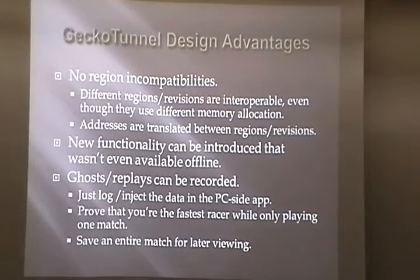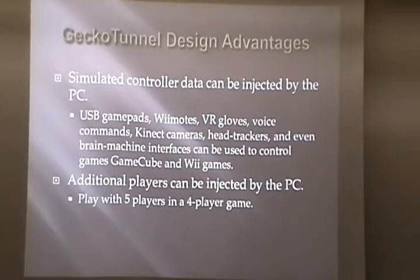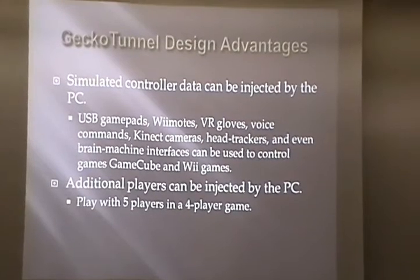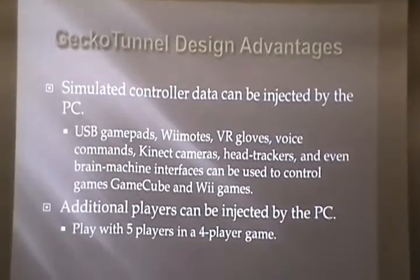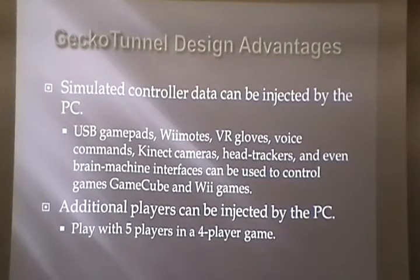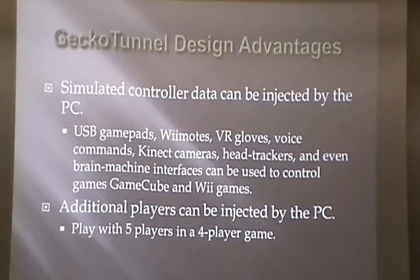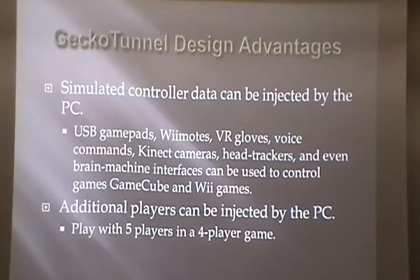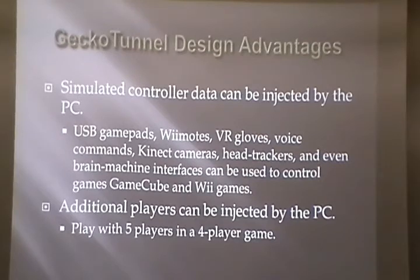You can simulate controller data by injecting it on the PC side. We did this with USB game pads, so you can play GameCube or Wii games with a USB game pad. But anything that can emulate a game pad will work — voice commands, connect cameras, even brain-machine interfaces like Emotiv and Neurosky will work with this. Also, additional players can be added by the PC. The easiest way to do that is to inject the extra human player's data into the data that would normally belong to an AI-controlled player, so the AI player disappears and gets replaced by a human player.